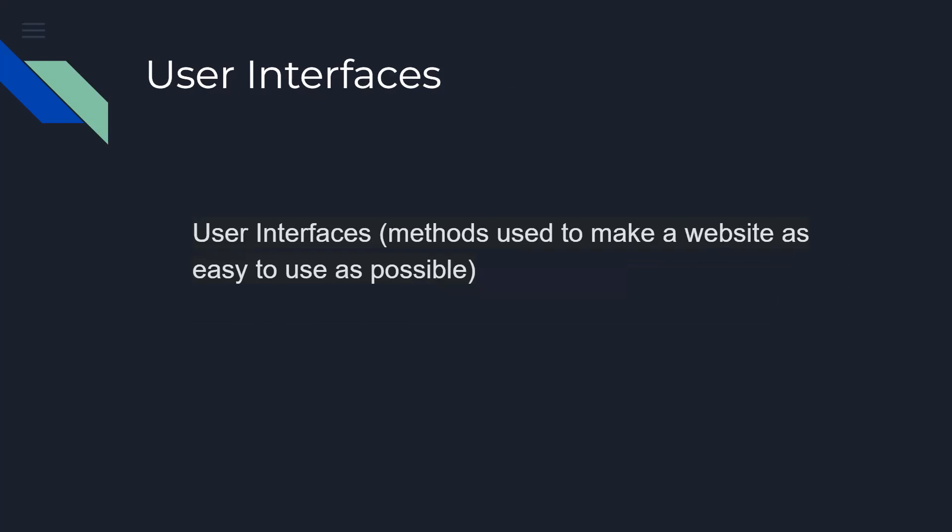User interfaces are basically all those buttons you see on the page. We use JavaScript, HTML, and CSS to create all those buttons. Like on WhatsApp, you type a message and press send — that play button. So those are user interfaces.